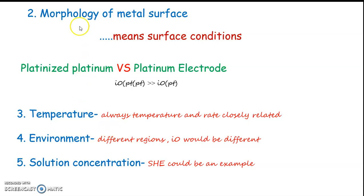The next factor is the morphology of the metal surface — that is, the composition of the metal surface. For example, when we use platinized platinum in place of plain platinum, its I₀ becomes larger. Platinized platinum means the platinum electrode is further plated with platinum, which makes its surface rougher and also increases the surface area. This leads to a much higher reaction rate and hence I₀ increases further.